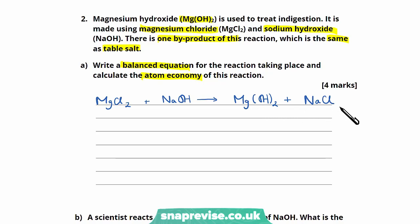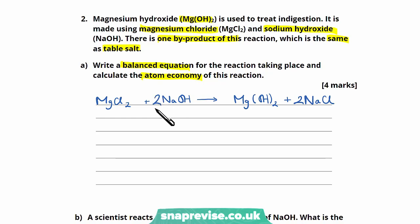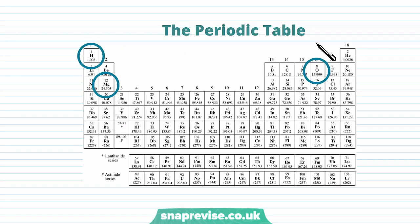Here we have our reaction. We need to balance it. We have two chlorines in our reactants and one in our products, so we put two in front of sodium chloride. Then to balance those two sodiums, we need two NaOH on the left. Checking confirms this balances the equation. Now we calculate the molar mass of magnesium hydroxide.